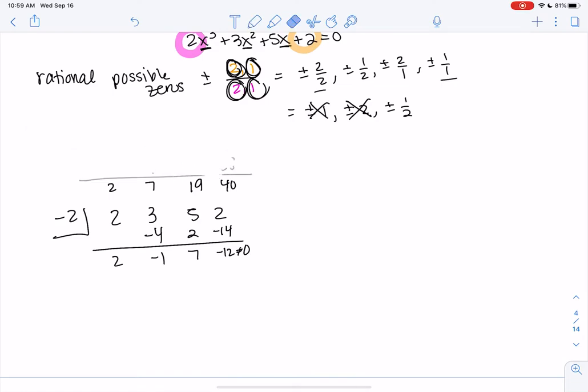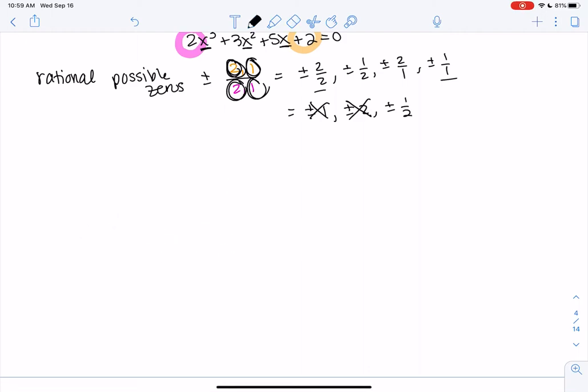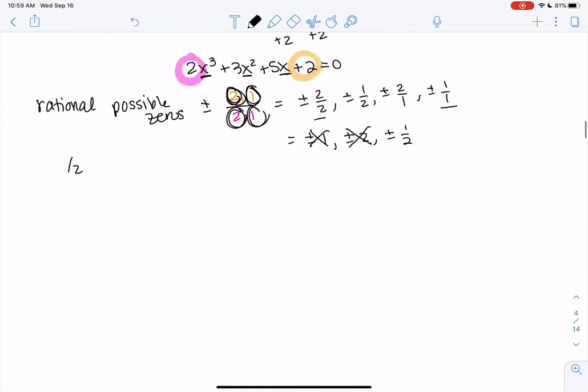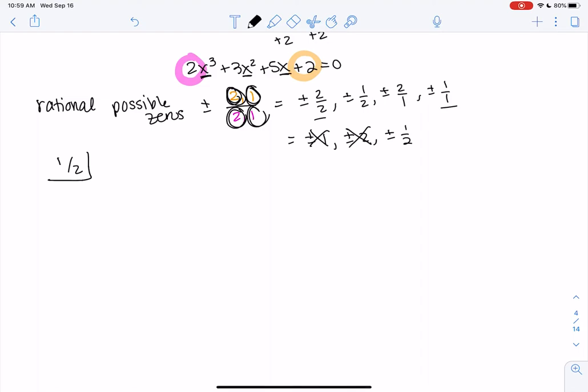So let's try 1 half and, 1 half or negative 1 half, sorry. So we just got unlucky. We clearly chose the wrong order. I guess we'll do a positive 1 half. So 2, 3, 5, 2. Sometimes you get lucky and you get that 0 right away. Other times you don't. That's okay.